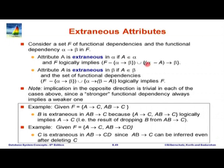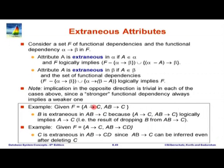We want to check if F implies the stronger dependency. For extraneous on the right-hand side, we check that after removing the attribute and adding back the weaker dependency, it still logically implies the original set. We have to ensure the new set of functional dependencies is equivalent — the closure is the same in both cases. The opposite direction is easy, so we only have to check one direction. If you do not fully understand this, it is okay — this stuff is non-trivial. Please read it afterwards to get a better understanding.